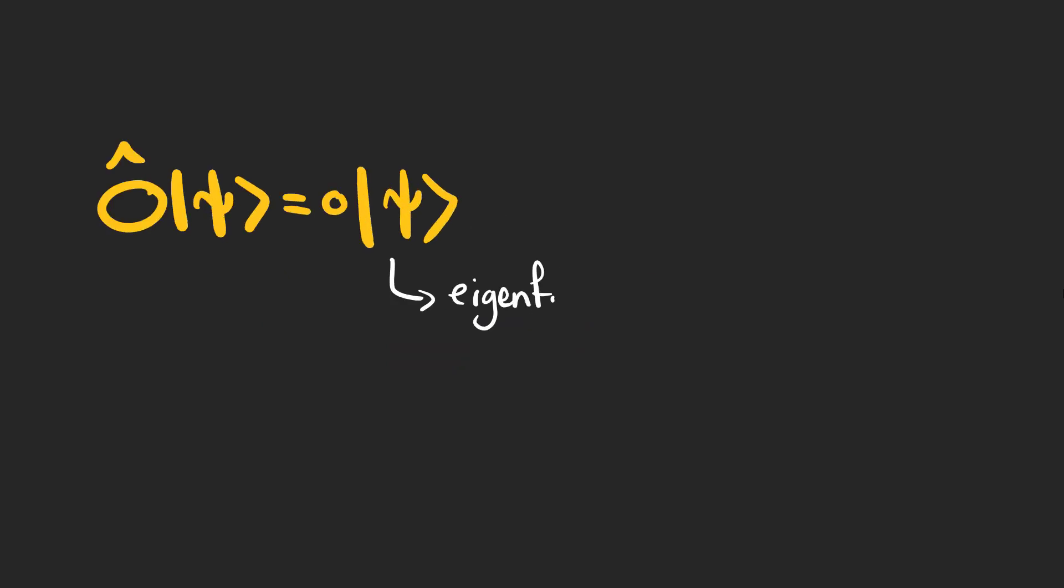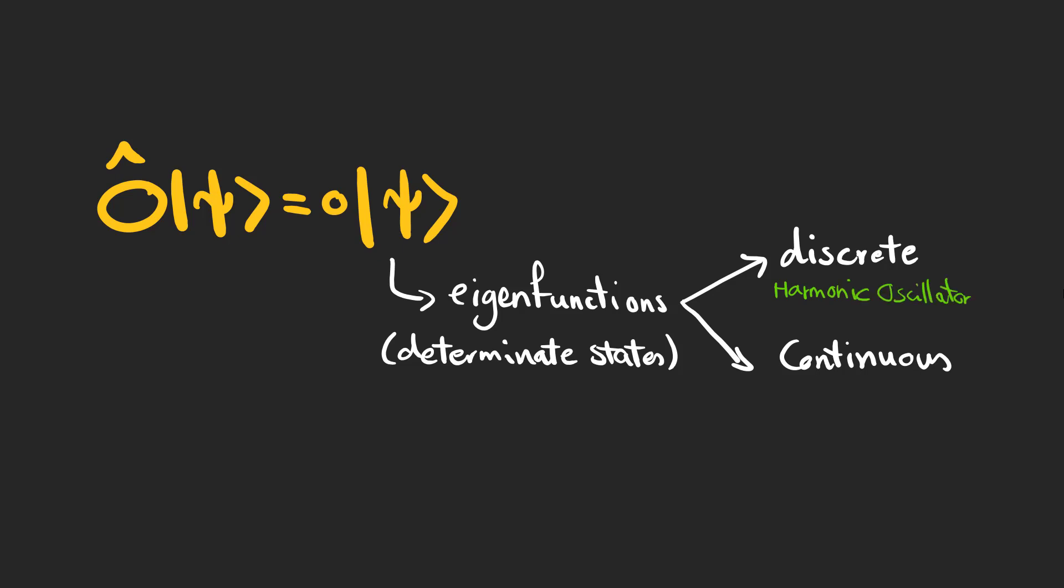Eigenfunctions of Hermitian operators, or physically speaking, determinate states of an observable, can be discrete or continuous. If the spectrum is discrete, all the eigenfunctions lie in the Hilbert space, like the eigenfunctions of the Hamiltonian for the harmonic oscillator.